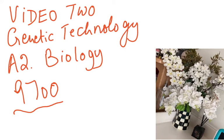We start video 2, which is on genetic technology for the A2 biology course 9700. We will further elaborate on the different steps involved in the production of a protein. The production of insulin is going to be discussed first, and then we'll talk about other proteins.